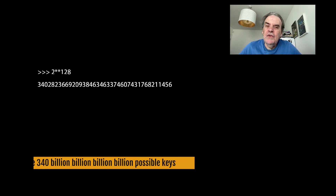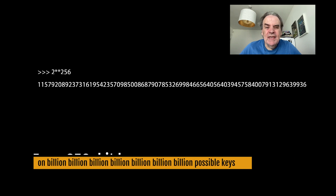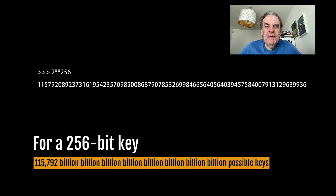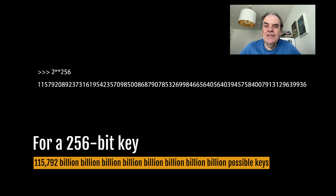For a 256-bit encryption key there are 115,792 billion billion billion billion billion billion billion possible keys. The calculation for this is 2 to the power of 256 divided by 10 to the power of 9, to the power of 8. There are 8 billions there.